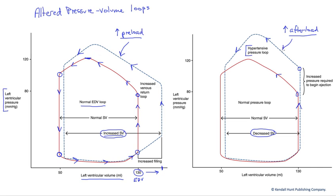We're spending more energy to eject blood when we're hypertensive, even though we're moving a reduced stroke volume.